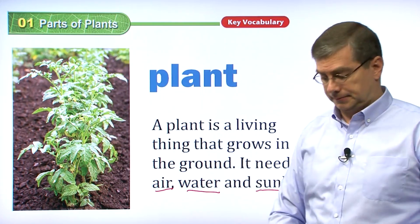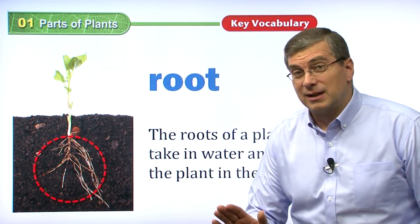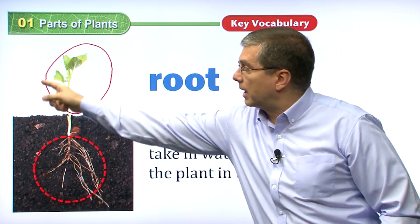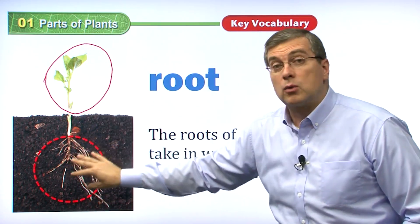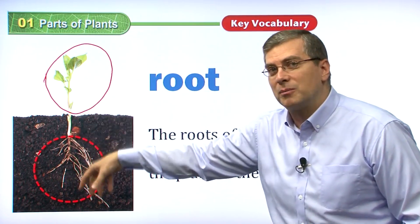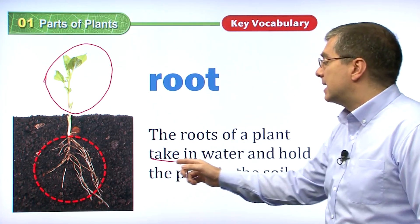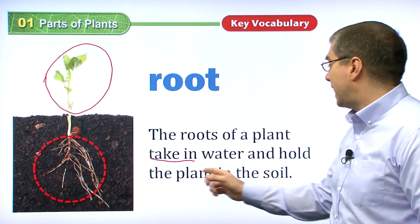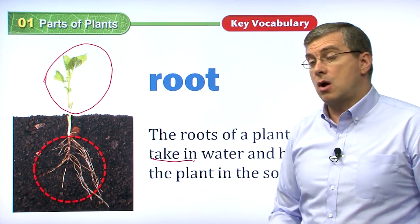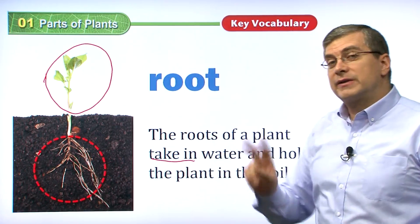Here we have the root. This is the part of the plant that you normally don't see — it's in the ground. In the previous picture we only saw the above-ground part of the plant; we didn't see the roots. The roots have many different arms going into the ground. The roots of a plant take in water and hold the plant in the soil. A plant needs air, water, and sunlight to grow, so the roots are the part that help the plant take in water.